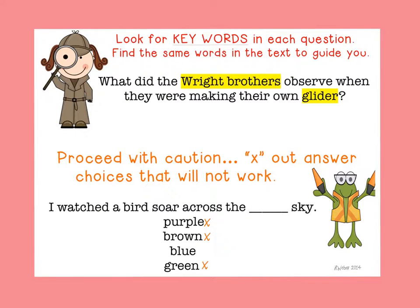When we have to approach a test situation, there are some tips and strategies that I find are really helpful. The first strategy I have for attacking a question is to look for keywords in a question. If you find these same words in the text, they will guide you as you select your answer. The next tip is to proceed with caution — ensuring that you are really eliminating answer choices that just don't make sense or won't work.